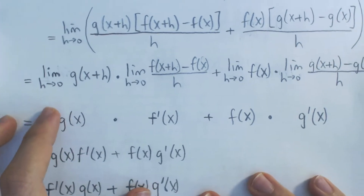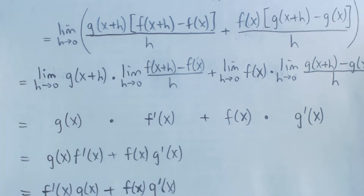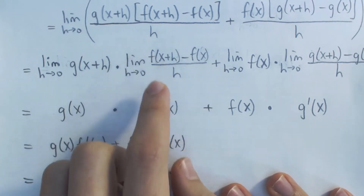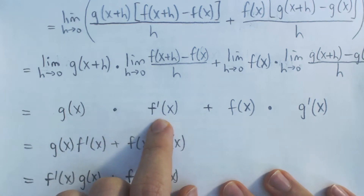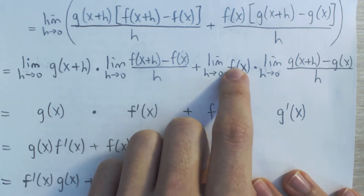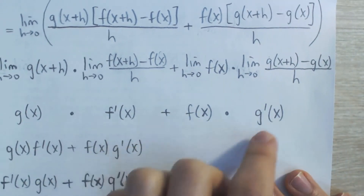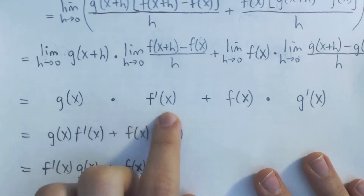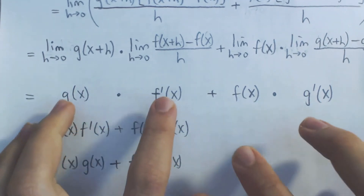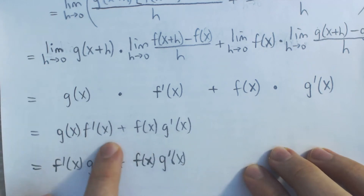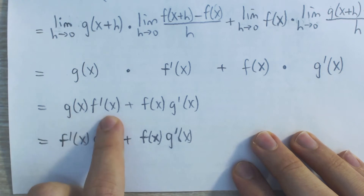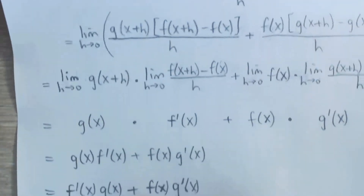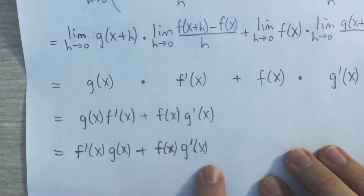Now we just evaluate these limits. The limit as h approaches 0 of g of x plus h — we can just plug in h equals 0 and we get g of x. The limit as h approaches 0 of f of x plus h minus f of x over h is, by definition, the limit definition of the derivative of f, so that's f prime of x. On the right, the limit as h approaches 0 of f of x — there's no h in the expression, so it's just f of x. And the limit of g of x plus h minus g of x over h is by definition g prime of x. So we get g of x times f prime of x plus f of x times g prime of x, which is our product rule.